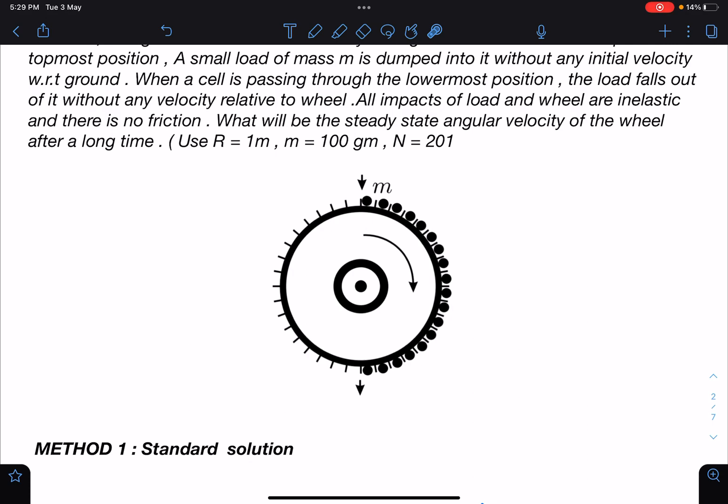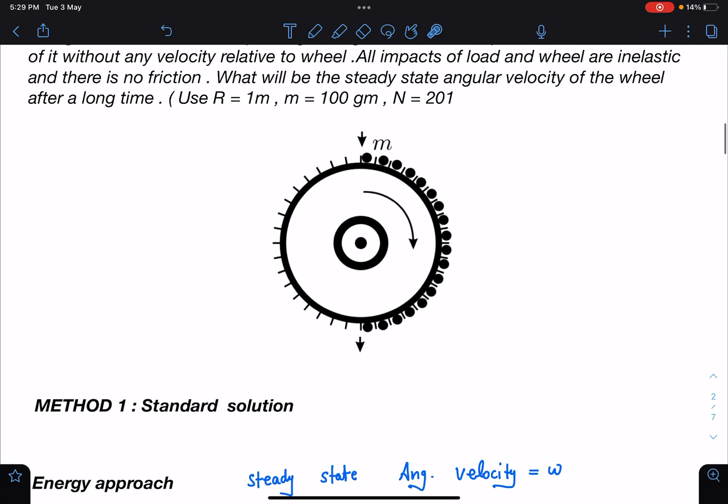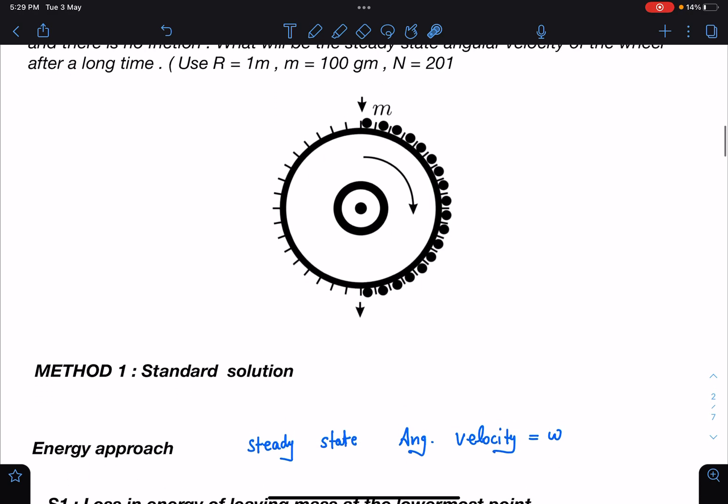The second approach can be: since angular velocity is constant, therefore the net torque on the wheel must be zero. This will be the second approach and that is where the trick lies. Let's see how to apply this in this question.